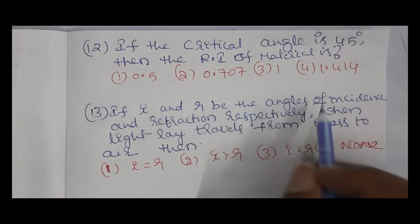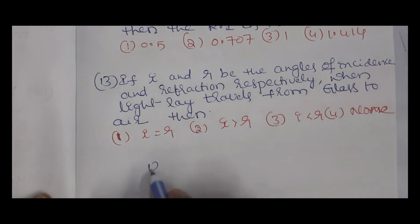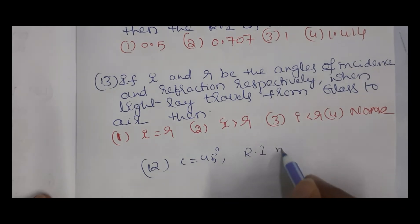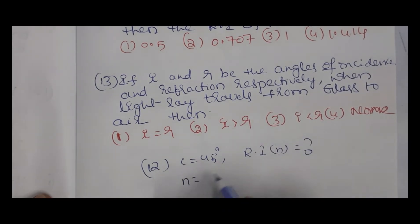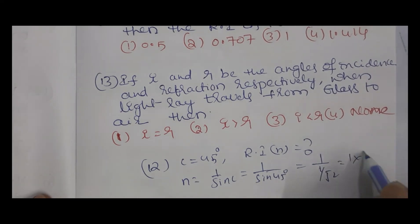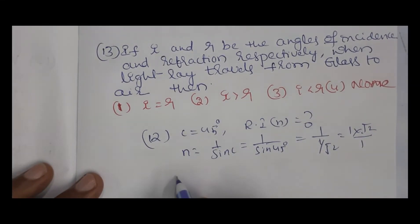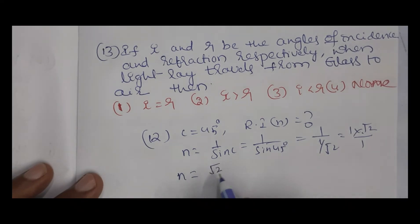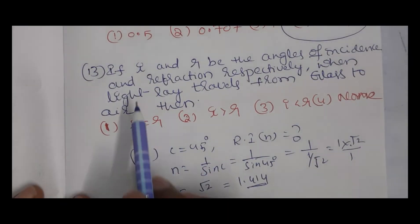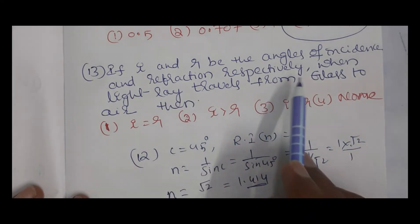Question 13: if the critical angle is 45 degrees, find the refractive index of the material. Using n = 1 / sin C = 1 / sin 45° = 1 / (1/√2) = √2 ≈ 1.414. The option is √2.